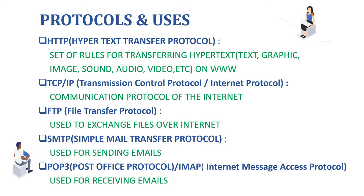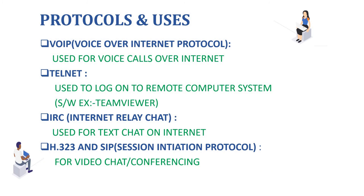The next one is POP3 — Post Office Protocol 3 — or IMAP — Internet Message Access Protocol. These are used for receiving emails. They provide a simple and standard method to access a mailbox and download all messages to the local computer. Once messages are downloaded, an internet connection is not necessary to read the mail.